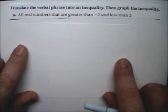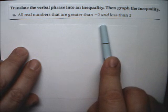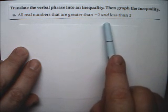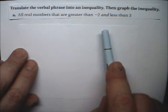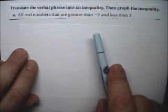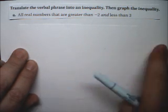It's a compound inequality. When it's AND, we can actually put both of these inequalities into one. When it's OR, we really can't put them into one. They have to stay as two inequalities with the word OR.